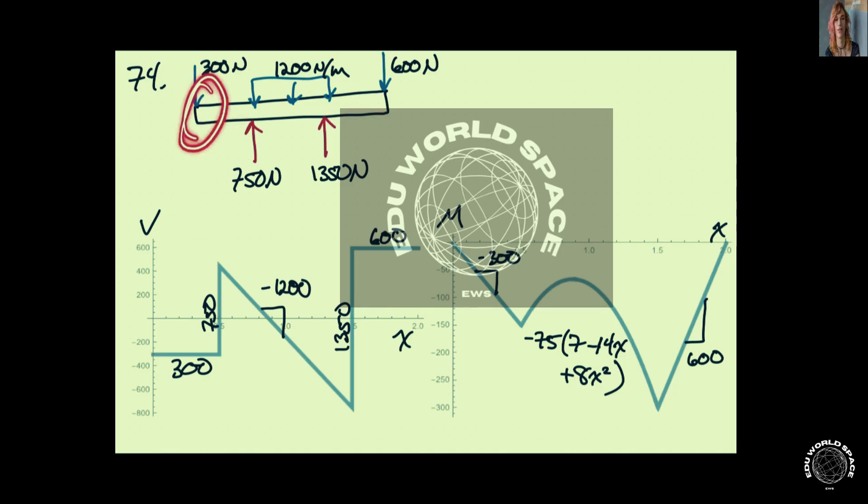On the left end, we have a 300 newton point load. On the right end, we have a 600 newton point load. Between the bearings, we have a uniform distributed load that's 1200 newtons per meter.